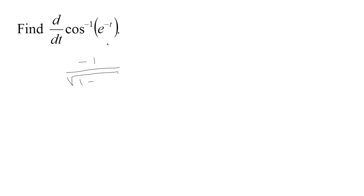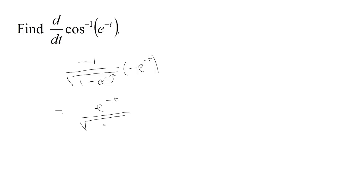Here's another one: the derivative of arccos(e^(-t)). The derivative of arccos is negative 1 over the square root of 1 minus x squared. We plug in the inside function e^(-t), so we get e^(-t) squared in the formula, then multiply by the derivative of e^(-t), which is negative e^(-t). Negative 1 times negative e^(-t) gives e^(-t) on top, and e^(-t) times e^(-t) is e^(-2t) downstairs, giving us e^(-t) over the square root of 1 minus e^(-2t).